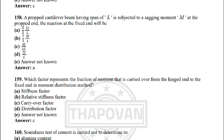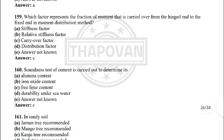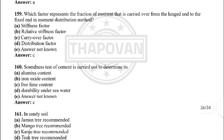Next: a propped cantilever beam having span L is subjected to a sagging moment M at the propped end. The reaction at the fixed end will be — the correct answer is option E: (3/2) × M / L. Next: which factor represents the fraction of moment that can be carried over from the hinged end to the fixed end in the moment distribution method? — the correct answer is option C: carry-over factor.